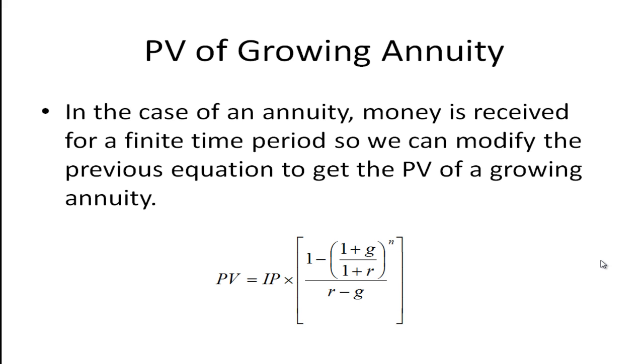Now if we have an annuity that's growing, the perpetuity case we see a lot of because of that constant growth dividend model for stocks, we can also figure out a formula and we have to modify the previous formula. The present value is going to be equal to the initial payment, it's not a constant amount it's an initial amount, and it's going to be multiplied by 1 minus 1 plus G divided by 1 plus R raised to the nth power. Make sure you do this in the correct numerical sequence, 1 plus G divided by 1 plus R and then raise it to the nth power and then subtract that number from 1 and then divide it by R minus G.